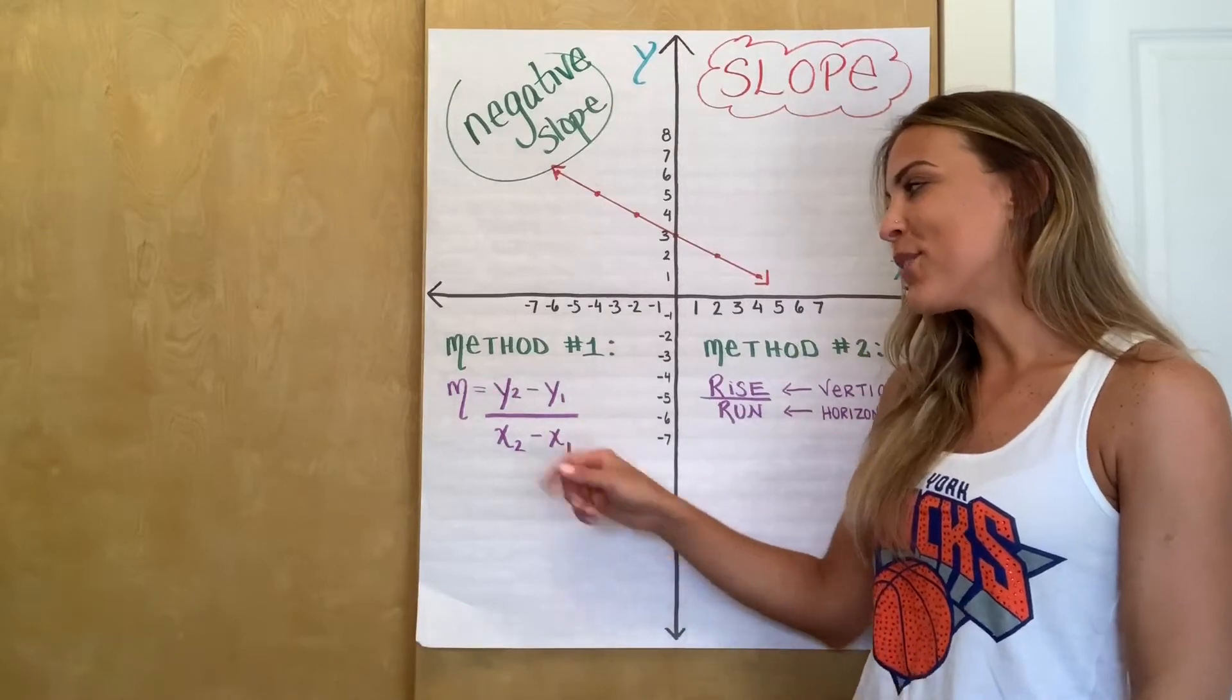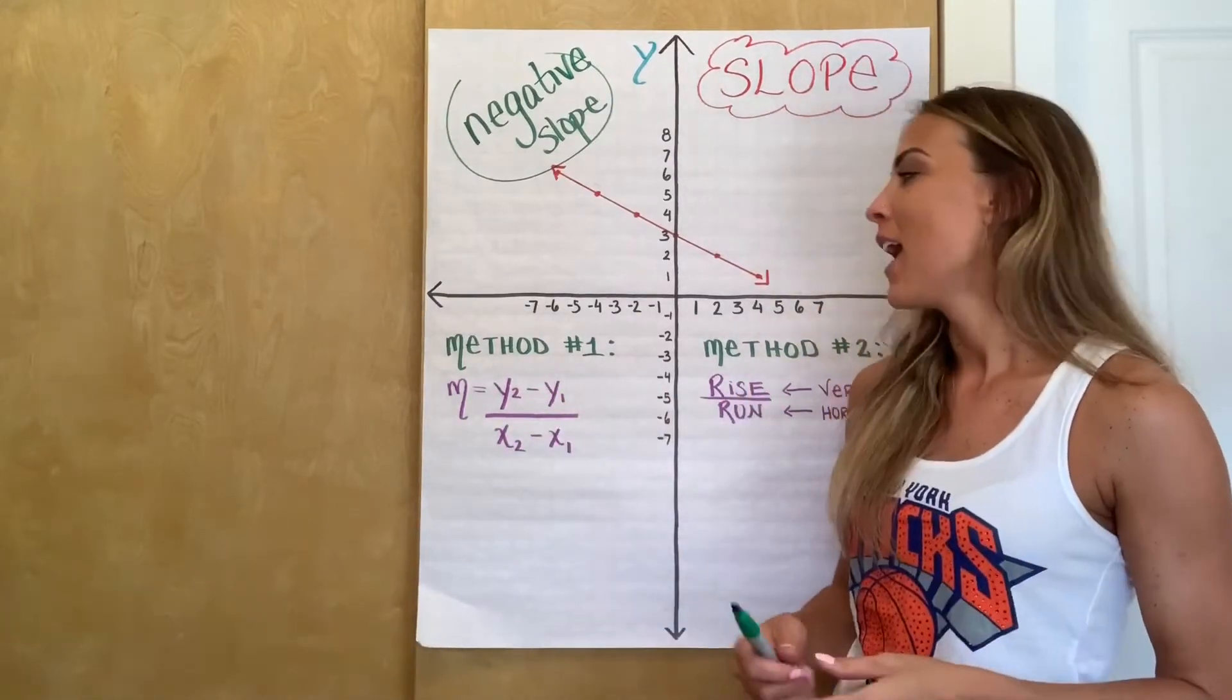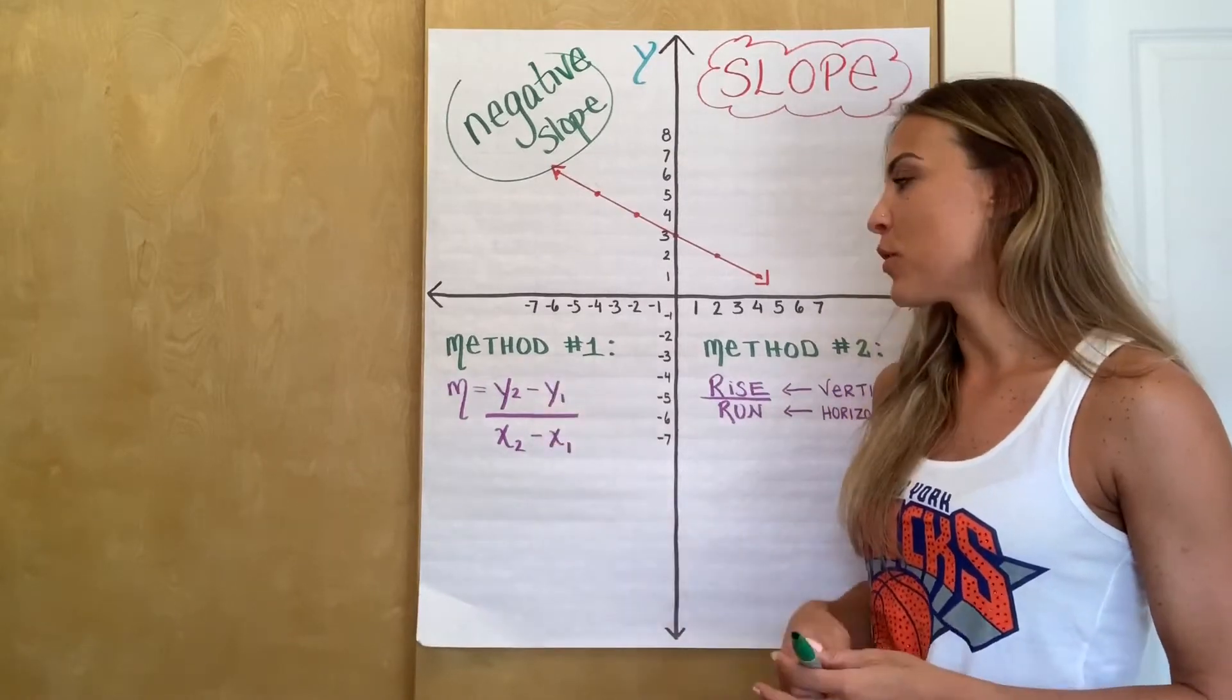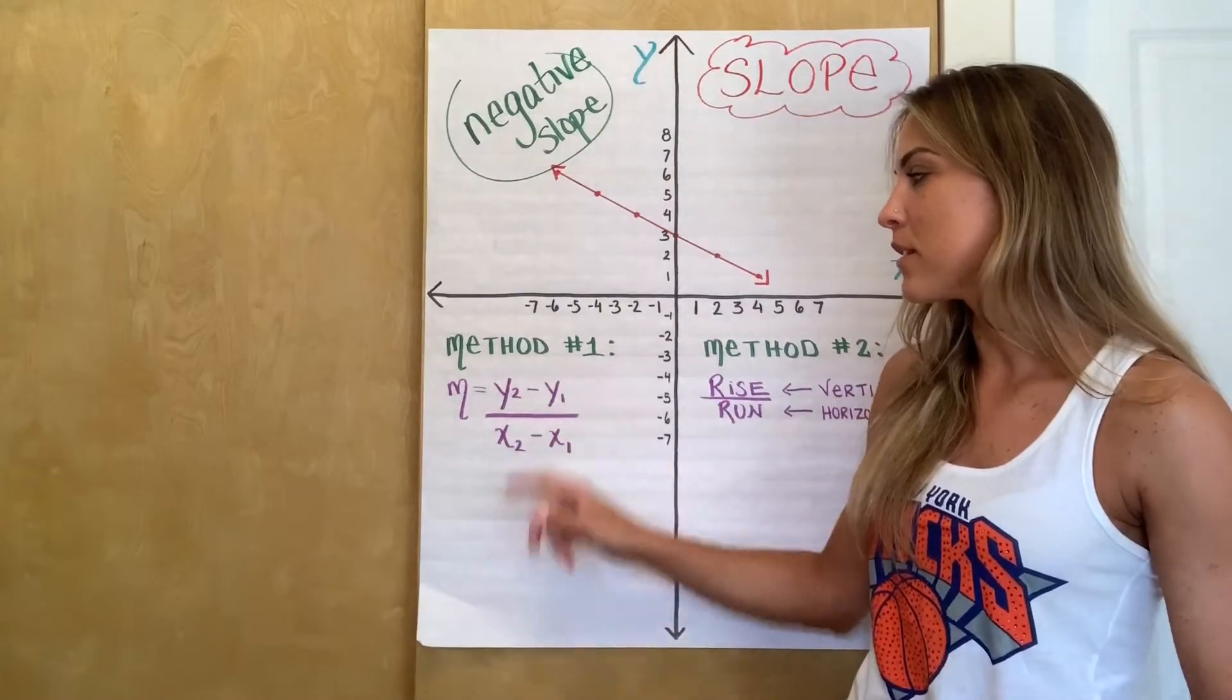It's important to note that these little guys, little 2 and the 1, are not exponents. They are just labels, okay? So they are subscripts. So y2 minus y1, not y to the second power. And I'll show you how we're going to use this.